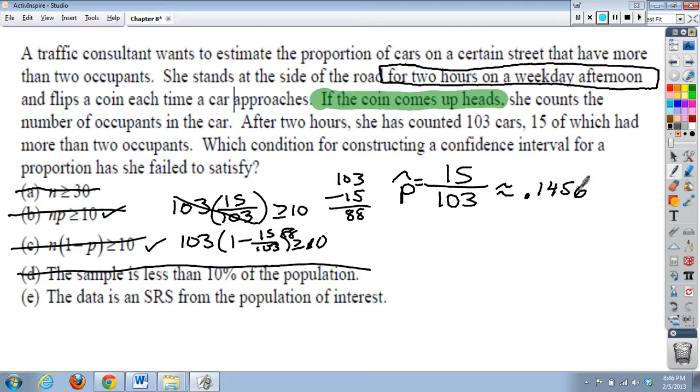maybe we randomly select times to go to this busy street, or this certain street, and collect data. Okay? So this was really a convenient sample, not just because she had the cars come up to her, but she went there on her own terms and collected data during these specific hours. So this doesn't really meet the criteria for all hours of all the day, or of all weekdays, or of the whole week. So it is a simple random sample in a way, but it doesn't really cover our population of interest. So this is the one. This is our answer for number two.